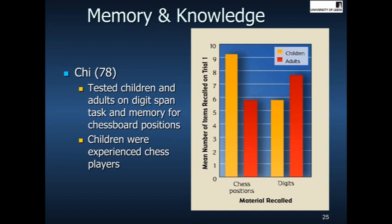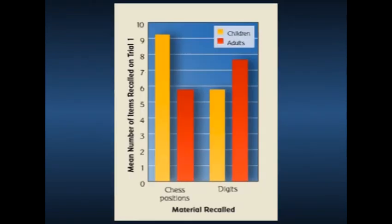In a very nice experiment, Chi did in 1978, he took advantage of children having more knowledge than adults on a particular subject. He gave children and adults a digit span task. When asked to remember strings of digits and try to repeat them back, the adults are better than the children. However, the twist in the tale here is that the children were experienced chess players and the adults had not played chess at all.